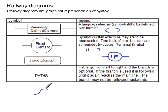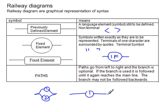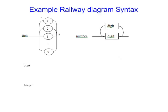A path can represent options — for example, a choice of one or two, meaning you can do one or two. Paths are also used to define loops. So if we have one and want it to loop, we put a loop in there, giving us one or multiple repetitions of one. Those are the symbols that railway diagrams are made up of.